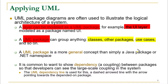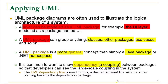A UML package is a more general concept than a Java package or a .NET namespace, which are logical boundaries provided to code. UML package is a more general concept than what we see in programming languages. It is common to want to show dependencies, such as coupling, between packages so developers can see large-scale coupling in the system. To show coupling, we use a dependency line — the dashed arrow seen in diagrams points towards the package being depended upon.